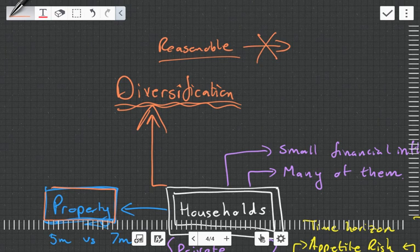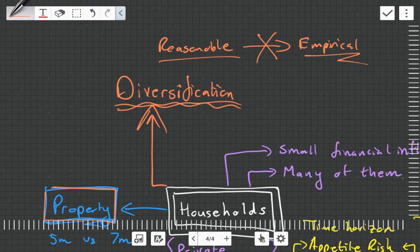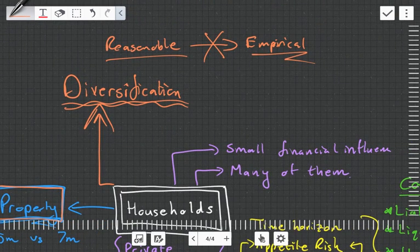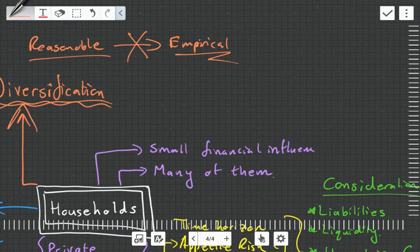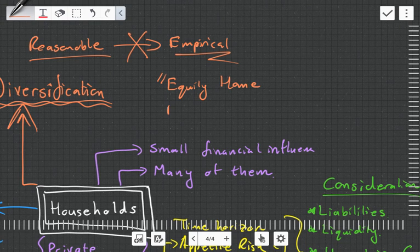Another interesting thing with regards to households that the notes talk about, and I disagree with, is it says that households desire diversification. What the notes say makes reasonable sense, but it's not empirically backed. There's not actually enough evidence to support what the notes are saying.